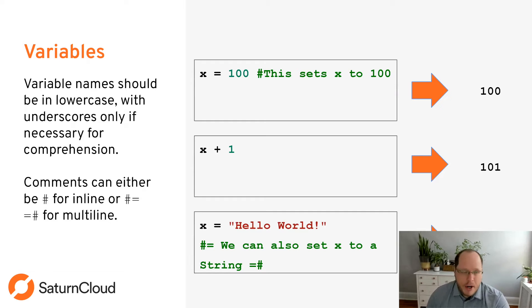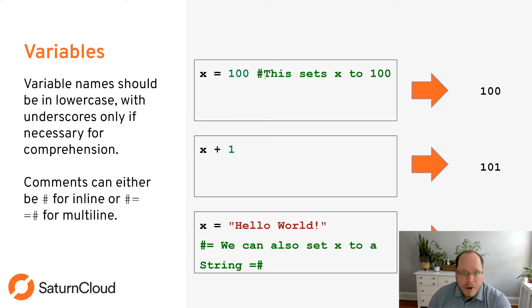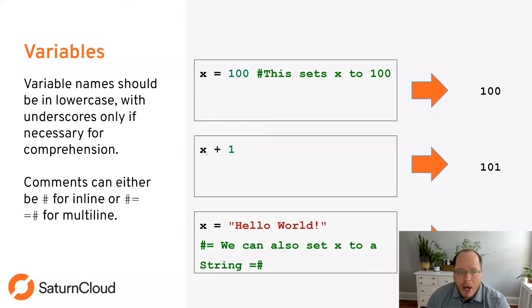Now variables: the convention in Julia is that variable names should be lowercase, and use underscores only if you really need them to make sense. Comments can be either a single pound sign for inline comments, or for multiple-line comments you use a pound sign equals and an equals pound sign. One of the cool things about Julia is that you can set a variable to whatever type you want — you can set it to an integer, then reset it to a string. This keeps things very flexible, though it can sometimes get you into trouble.